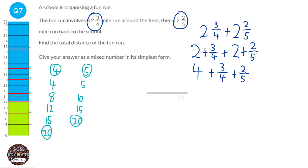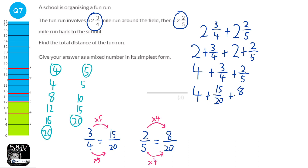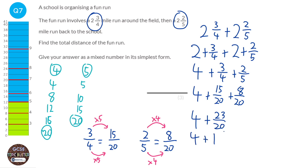We need the bottoms of the fractions to equal 20. For three quarters, we multiply bottom by 5 and top by 5 to get 15 over 20. For two fifths, we multiply by 4 to get 8 over 20. So it's 15 over 20 plus 8 over 20, giving 23 over 20. That's a top-heavy fraction, which we rewrite as 1 and 3 twentieths. Adding to the 4 gives a final answer of 5 and 3 twentieths.